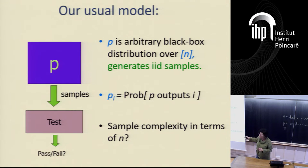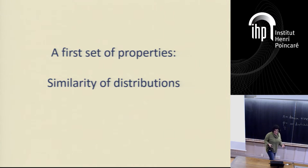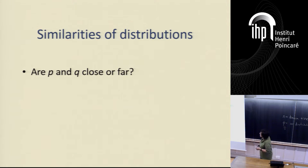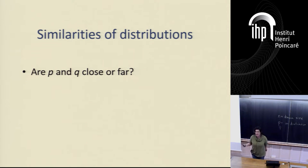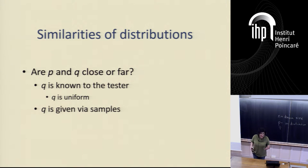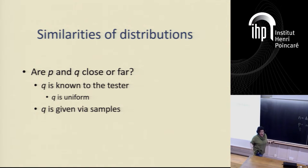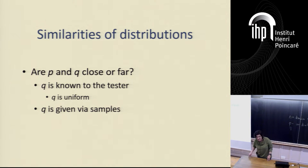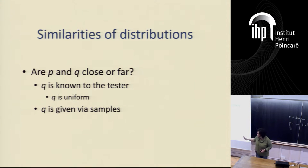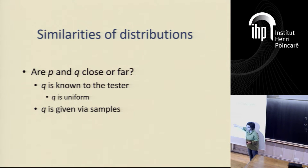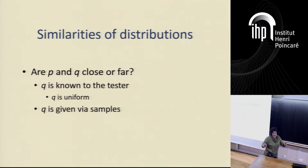We're interested in the sample complexity in terms of N, the size of the domain. Let's talk about similarities of distributions. We want to know if P and Q are close or far. Maybe Q is known to the tester — like maybe Q is the uniform distribution, given by samples from P. Maybe Q is some other arbitrary distribution where somebody wrote down all the probabilities for me. I can generate it myself if I want but I don't have to sample it. P, though, I know nothing about; I only get samples. That's one type of question where Q is known.